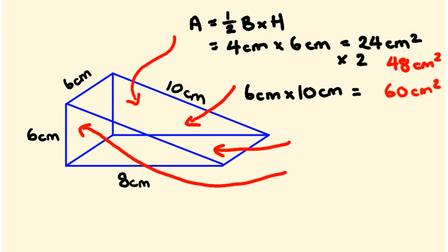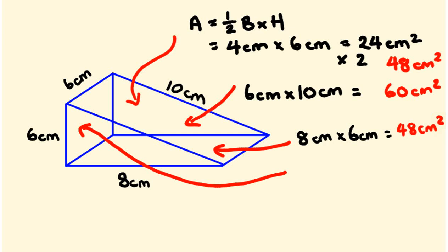Now we have this bottom one here, which is another rectangle: 8 centimeters by 6 centimeters, so 8 times 6 is 48 centimeters squared. And finally we have this back rectangle, which is 6 by 6 — so 6 centimeters by 6 centimeters equals 36 centimeters squared.